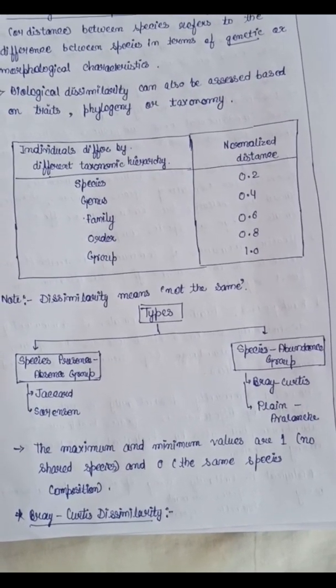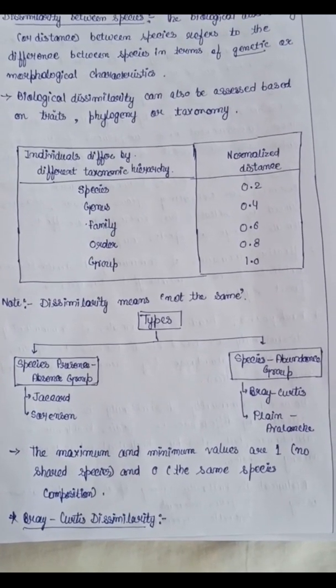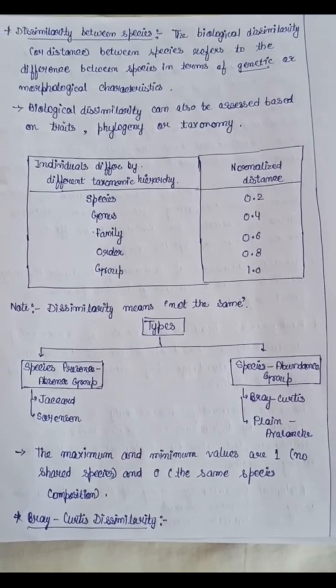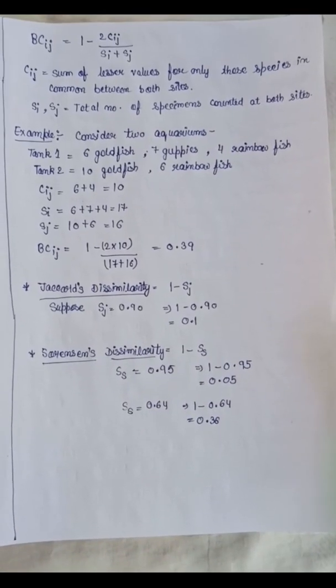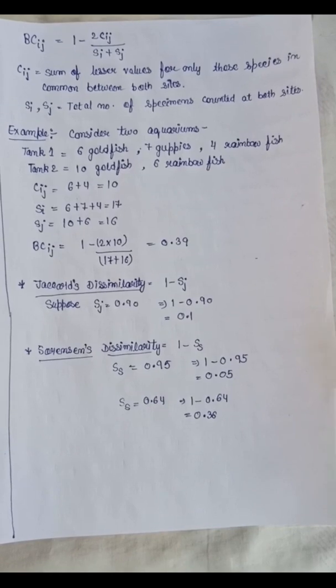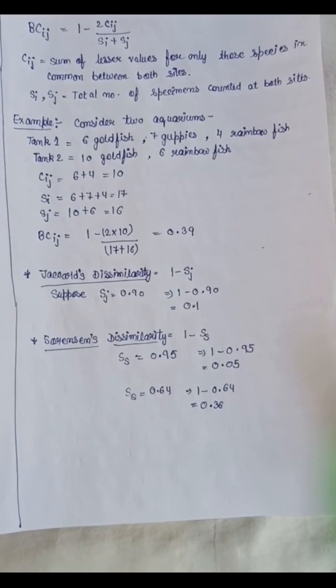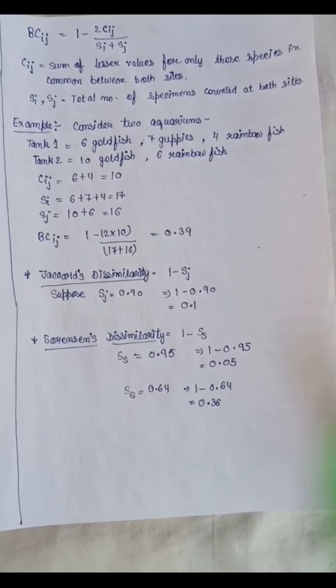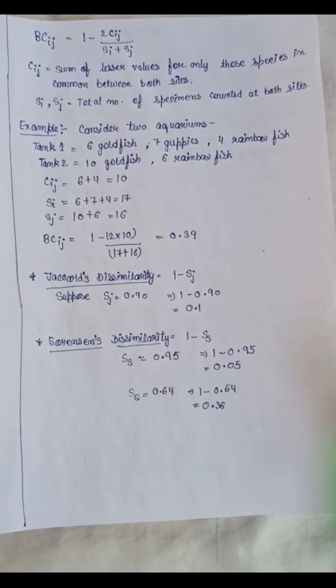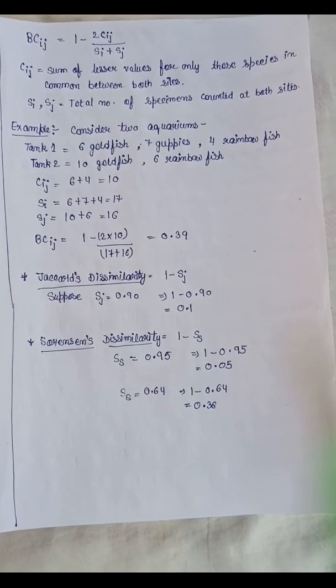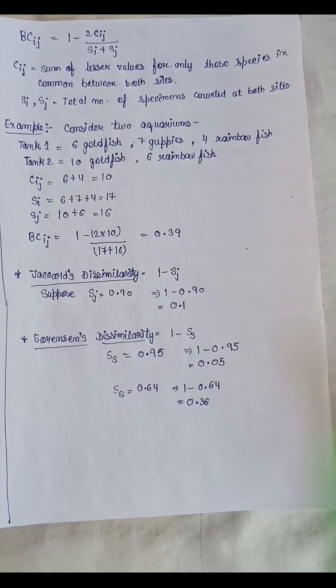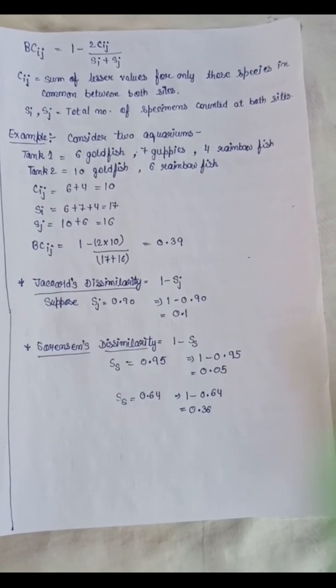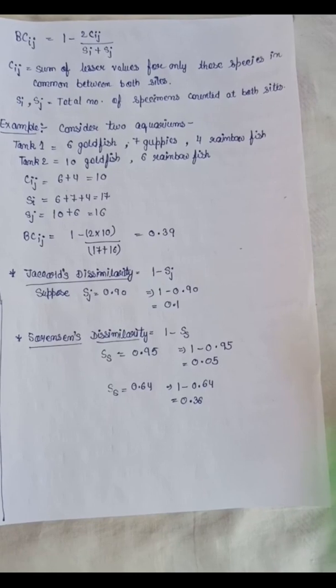Bray-Curtis dissimilarity formula: BCij = 1 - 2Cij/(Si + Sj). Cij denotes the sum of the lesser value for only those species in common between both sites. Si and Sj denote the total number of specimens counted at both sites.